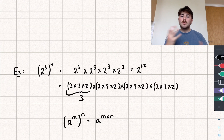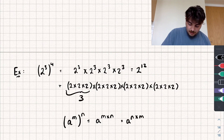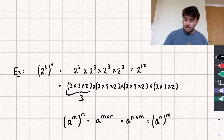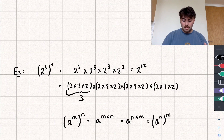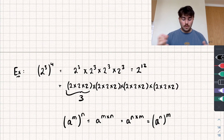This is our third law: a to the power of m, all to the power of n, equals a to the power of m times n. Because multiplication is commutative, it doesn't matter what order we multiply — m times n or n times m gives the same result.